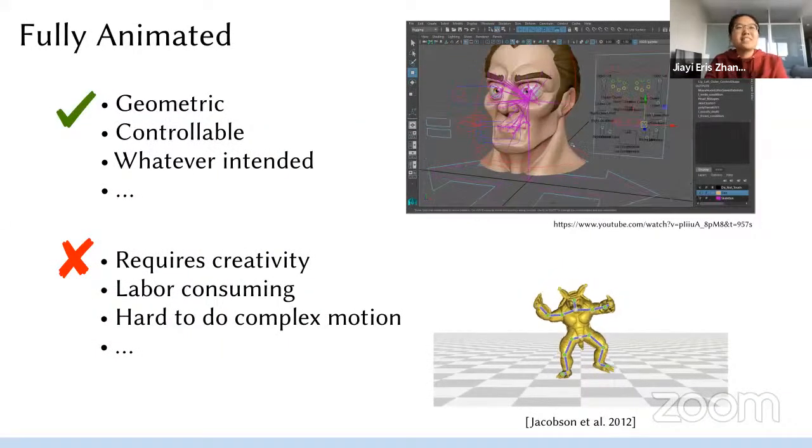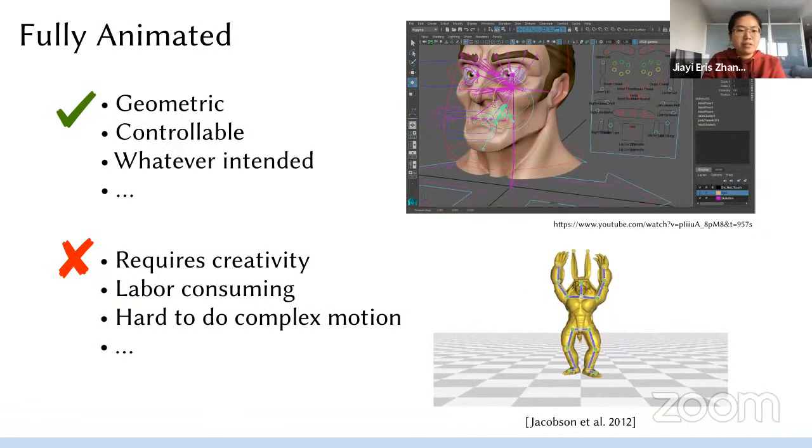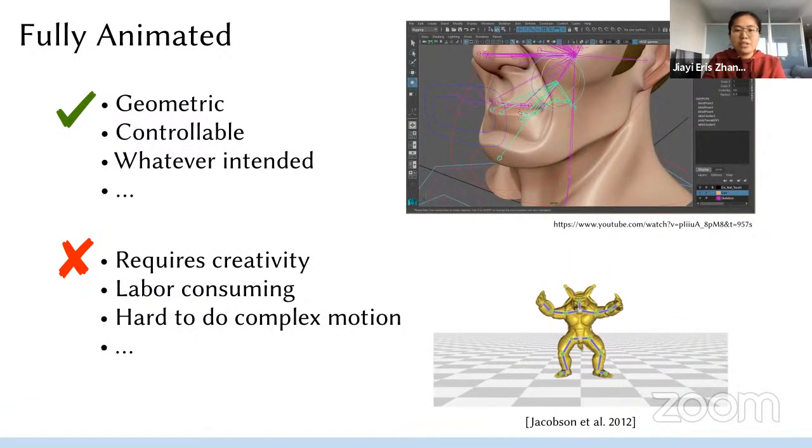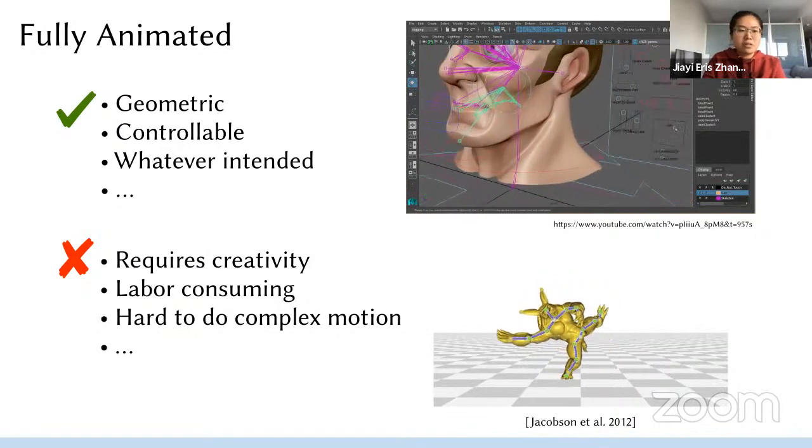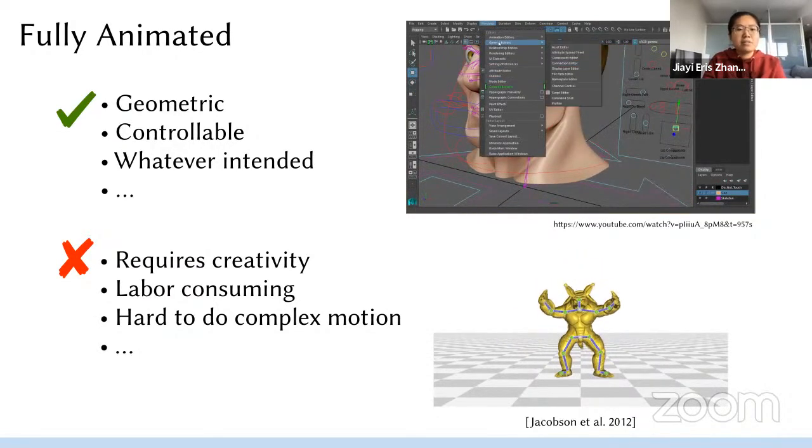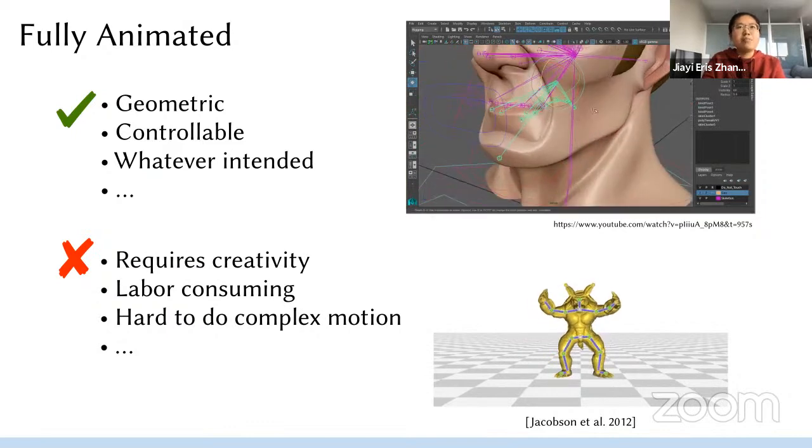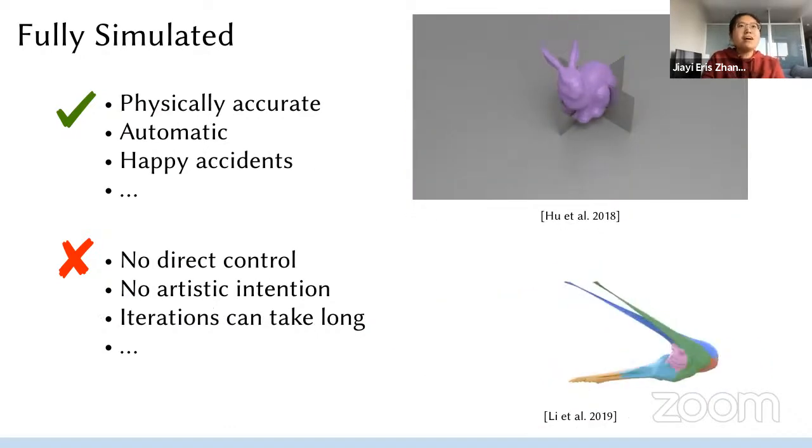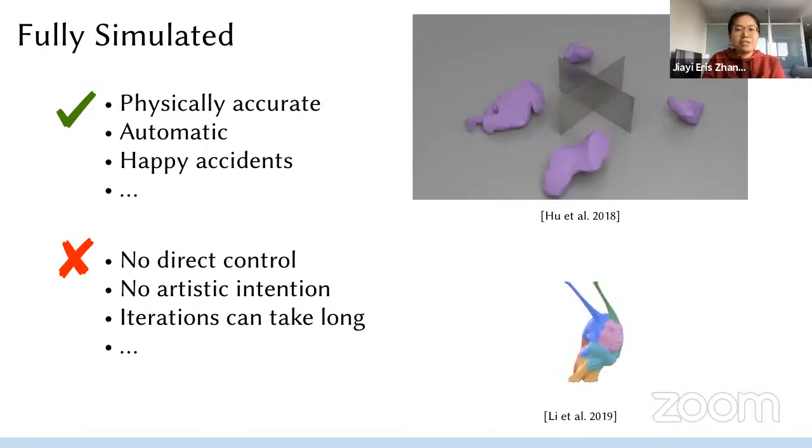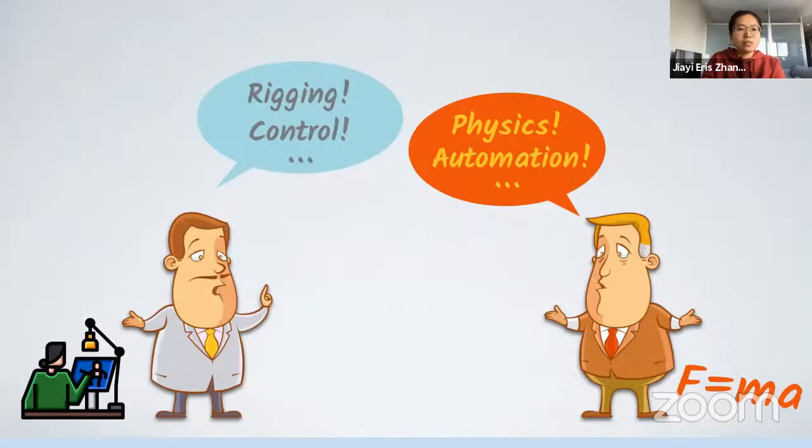People want control over the animation, so they might make it fully animated. This is a good idea since the methods are usually purely geometric and the animator could do whatever they want. However, this is also not that ideal since it requires a fair amount of creativity and could be labor consuming or hard to achieve complex motion. While on the other hand, people love physical simulation, so they might wish this could be fully simulated. The pros and cons of this approach is obvious too. While the physical accuracy could be maintained and sometimes get happy accidents, there is no direct control or artistic intention acted on this animation.